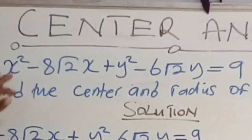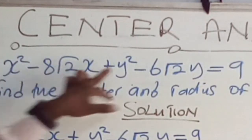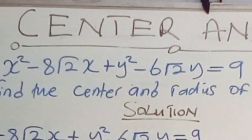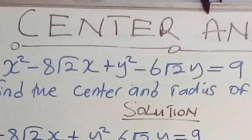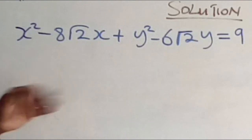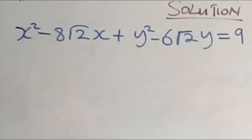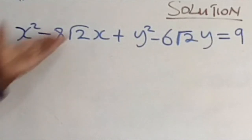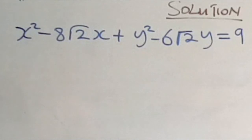Because the coefficient of x² and that of y² is 1, we can go ahead and implement a method that is going to work for us when finding the radius and the center of the circle. We use the completing the square method.